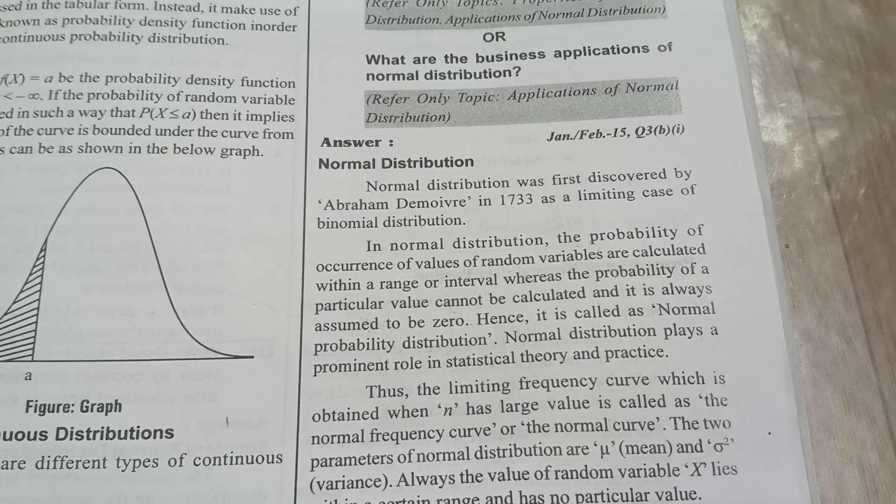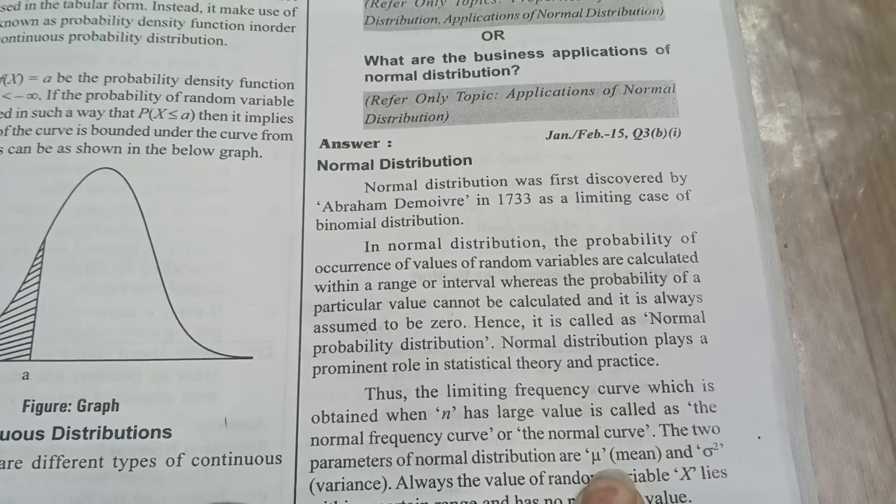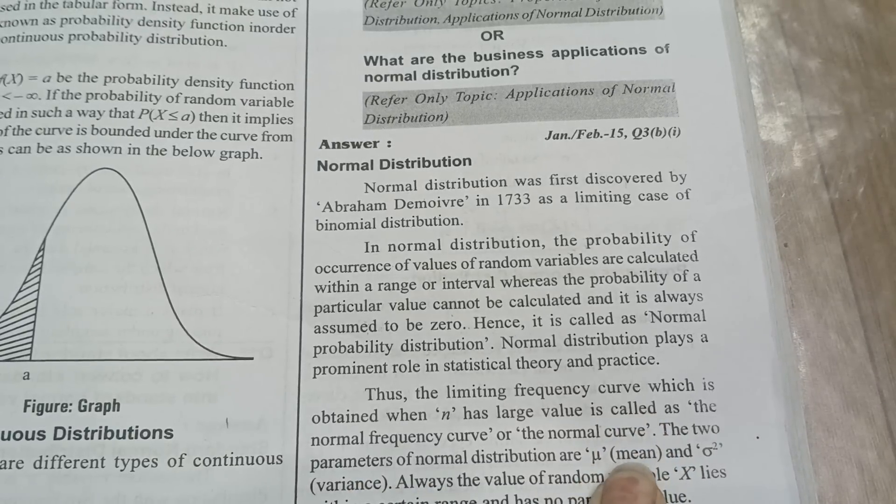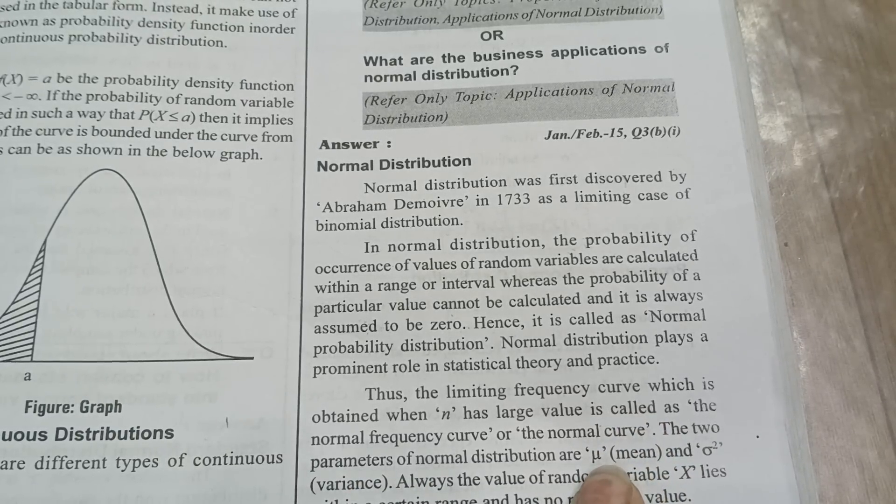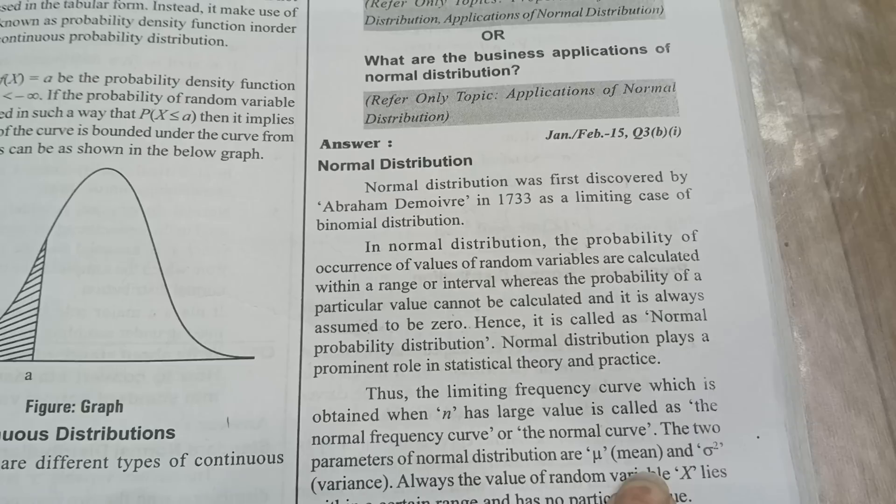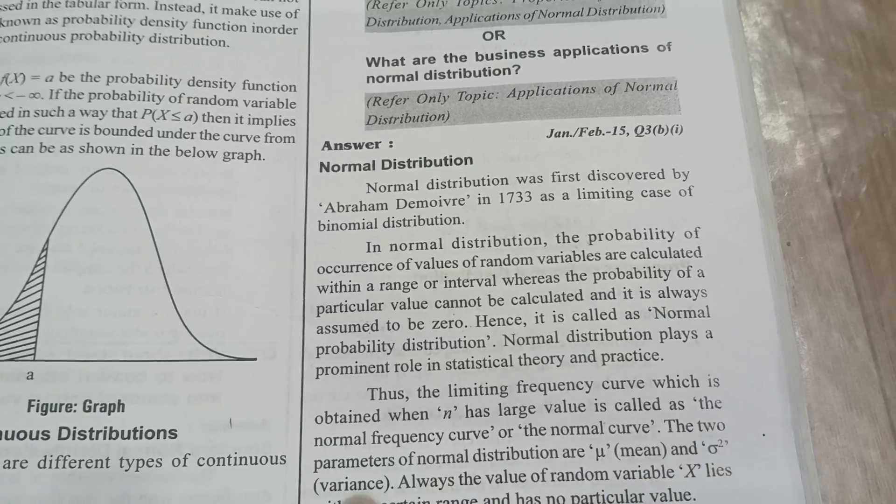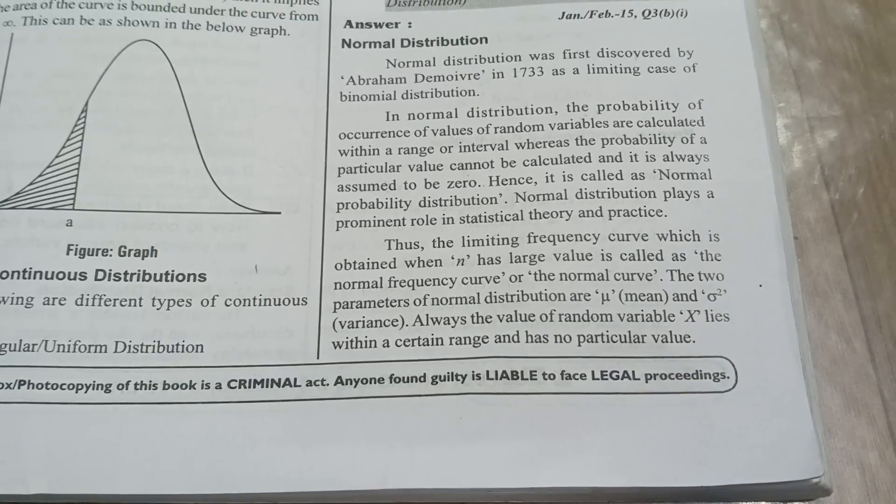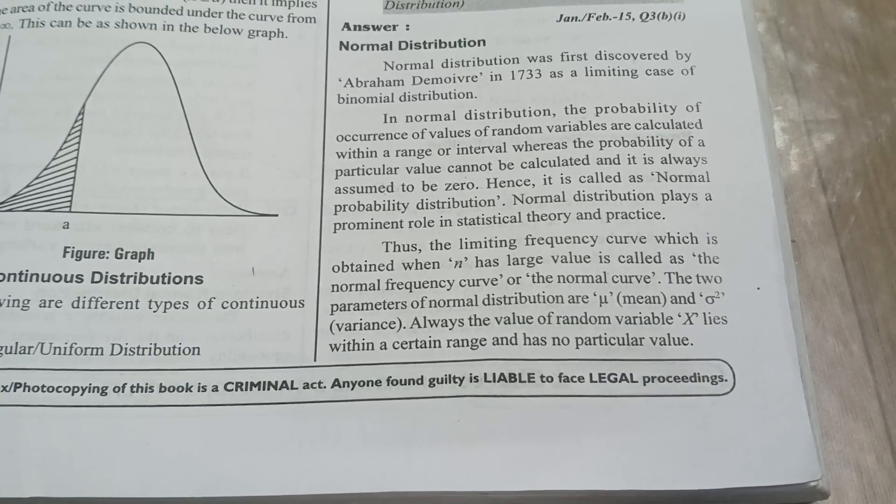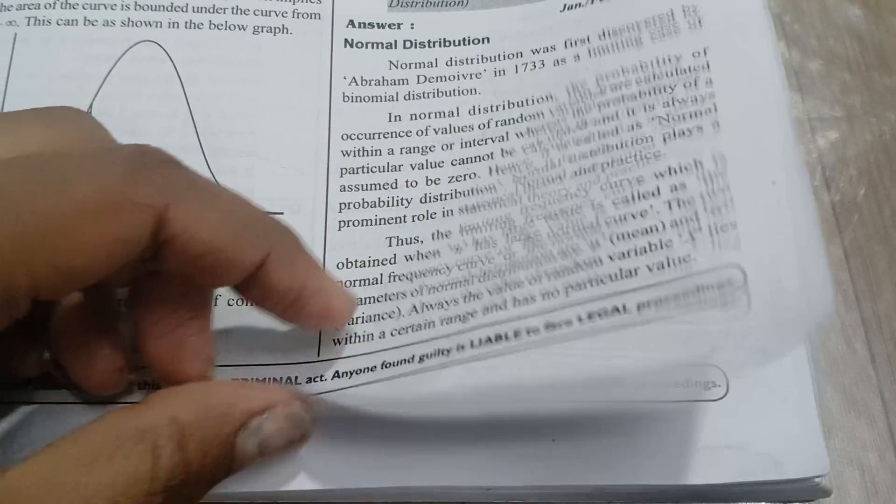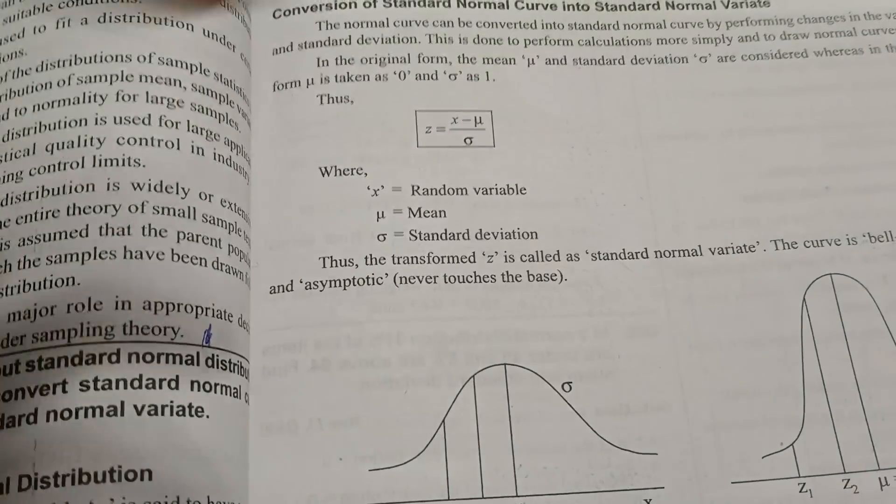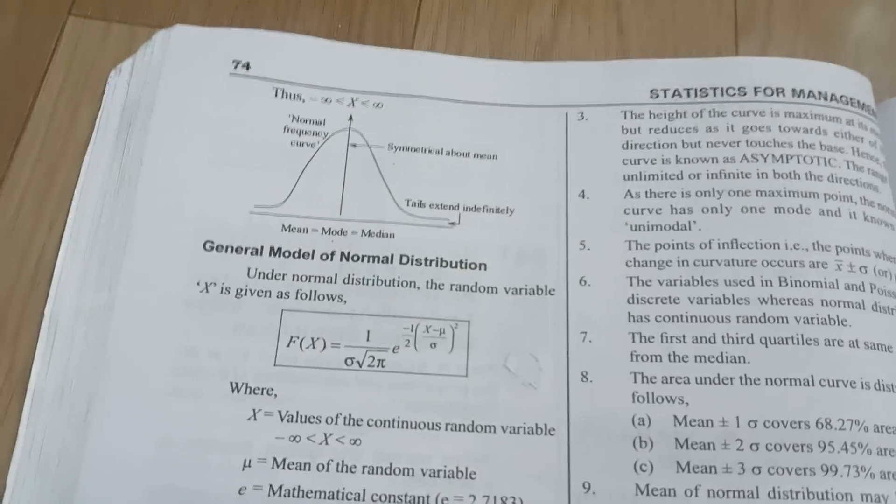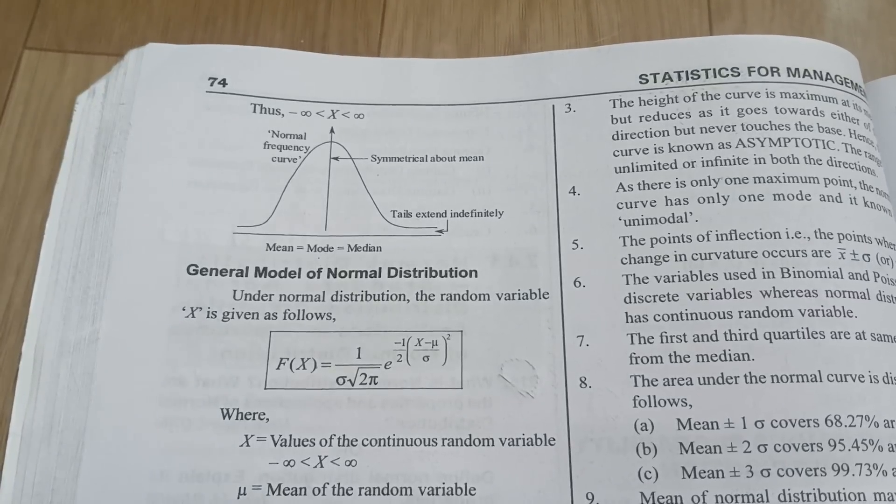Normal distribution, n is equal to always zero. We can call it as a frequency curve or a normal curve. Delta, mu - this symbol is mean, and this symbol is meant to be variance. Mean and variance - whatever the mean and variance relationship is there, whatever the things are there, two different variables and the mean, that is called normal distribution. For this normal distribution, mark definitely, this diagram you need to draw it. This is the normal distribution diagram.